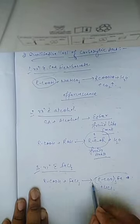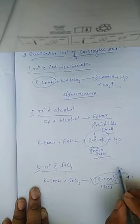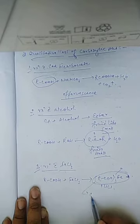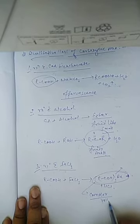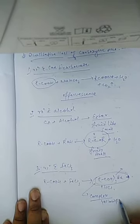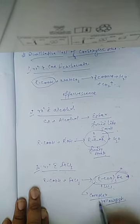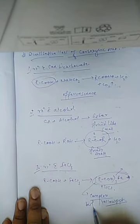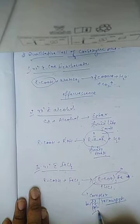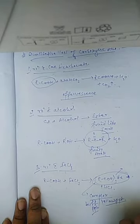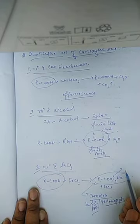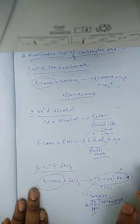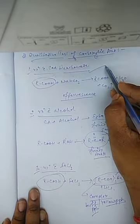A complex is produced which gives an almost yellow color precipitate — also called a buff precipitate in some books. This buff or yellow precipitate is the indication that the compound has the functional group carboxylic acid. So three tests can be done: first, with sodium bicarbonate.